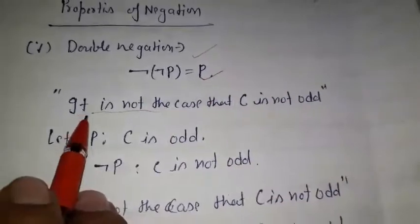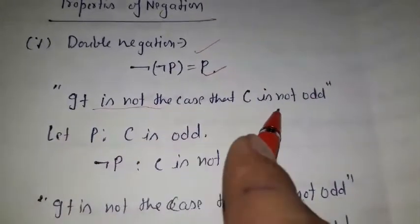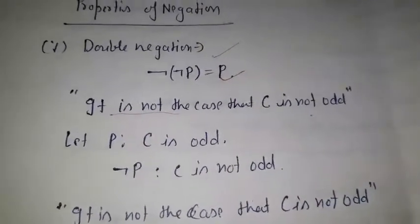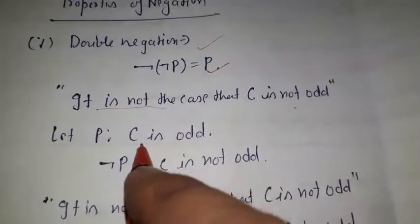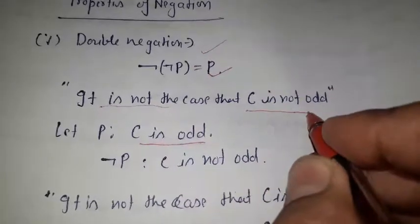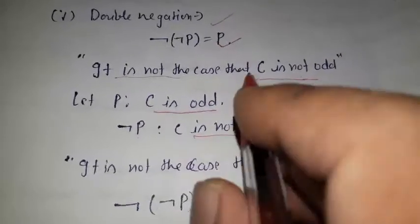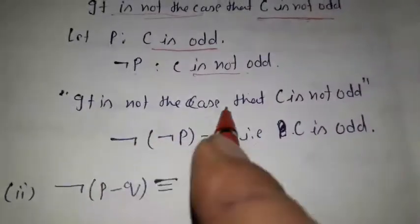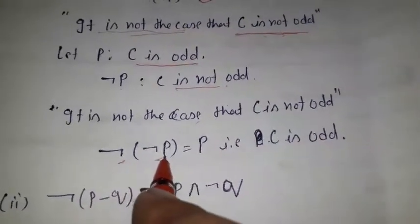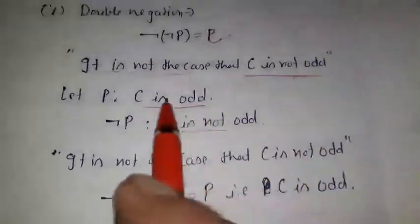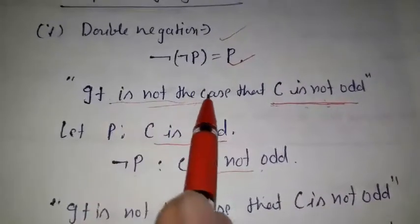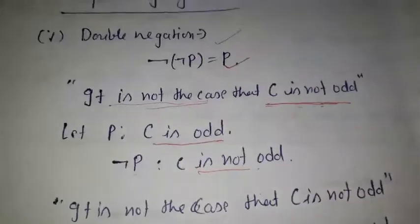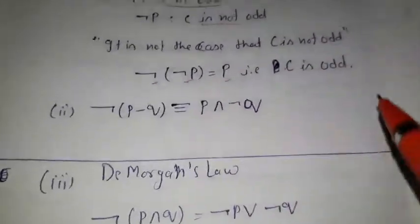For example: 'It is not the case that C is not odd.' Let P be the proposition 'C is odd'. Then 'C is not odd' is the negation of P, denoted not P. 'It is not the case that C is not odd' is the negation of not P, which is the negation of negation of P, which equals P — that is, 'C is odd'. So the statement means there is no case where C is not odd, meaning C is odd.